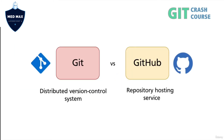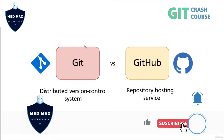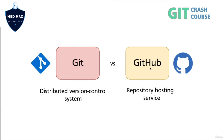First, I'd like to explain the difference between Git and GitHub. Git is a distributed version control system and does not even require a connection to the internet — you could use Git only locally on your computer. GitHub is a repository hosting service that allows you to host your Git repositories.